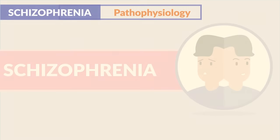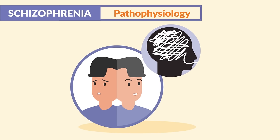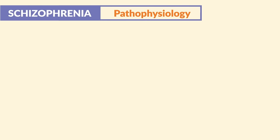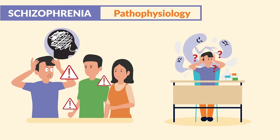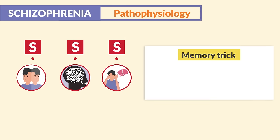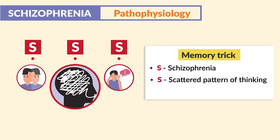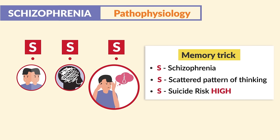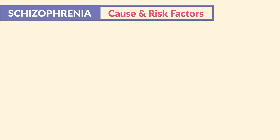Now for schizophrenia. For the pathophysiology, this includes an abnormal scattered pattern of thinking for about six months or more. It often starts to affect relationships as well as school and workflow, as clients cannot concentrate. So the memory trick — think of the three S's: S for schizophrenia, S for scattered pattern of thinking, and S for suicide risk that is high.